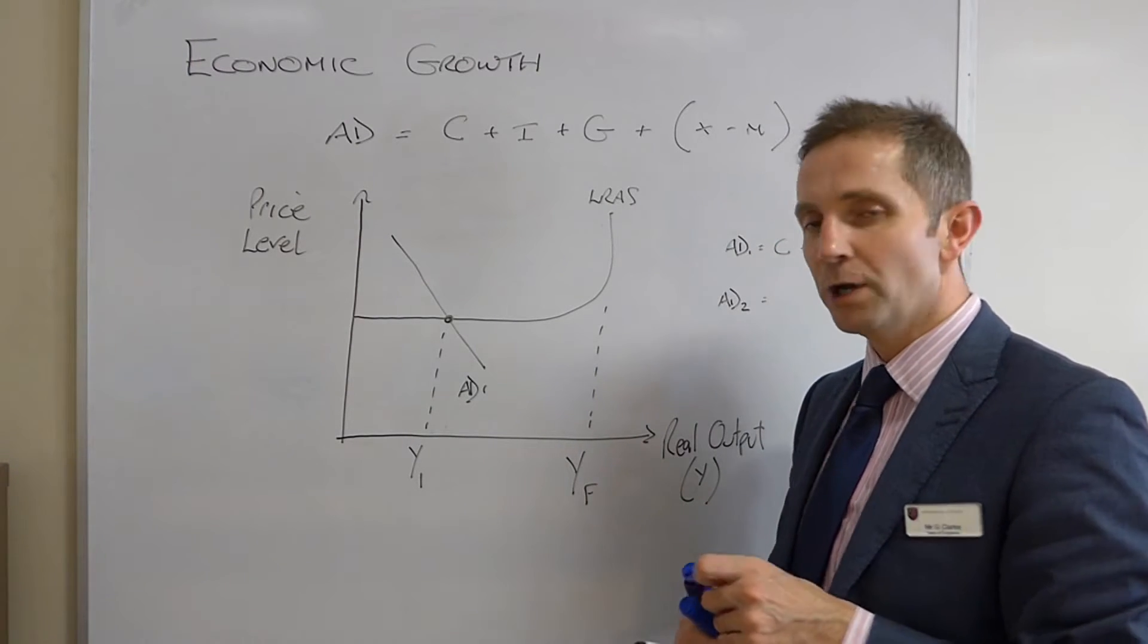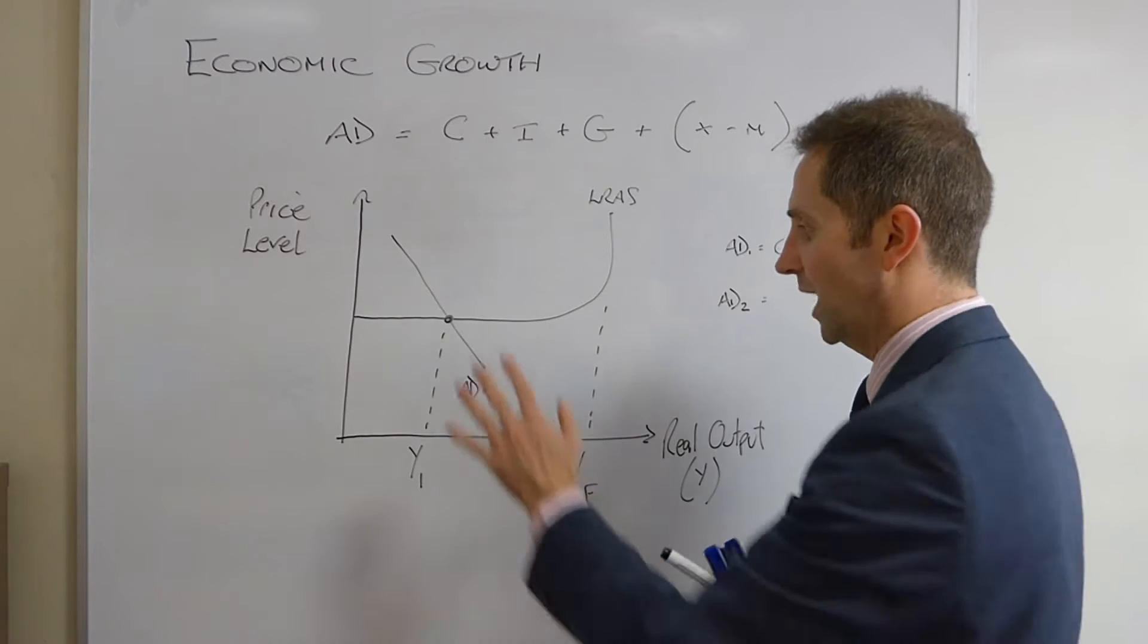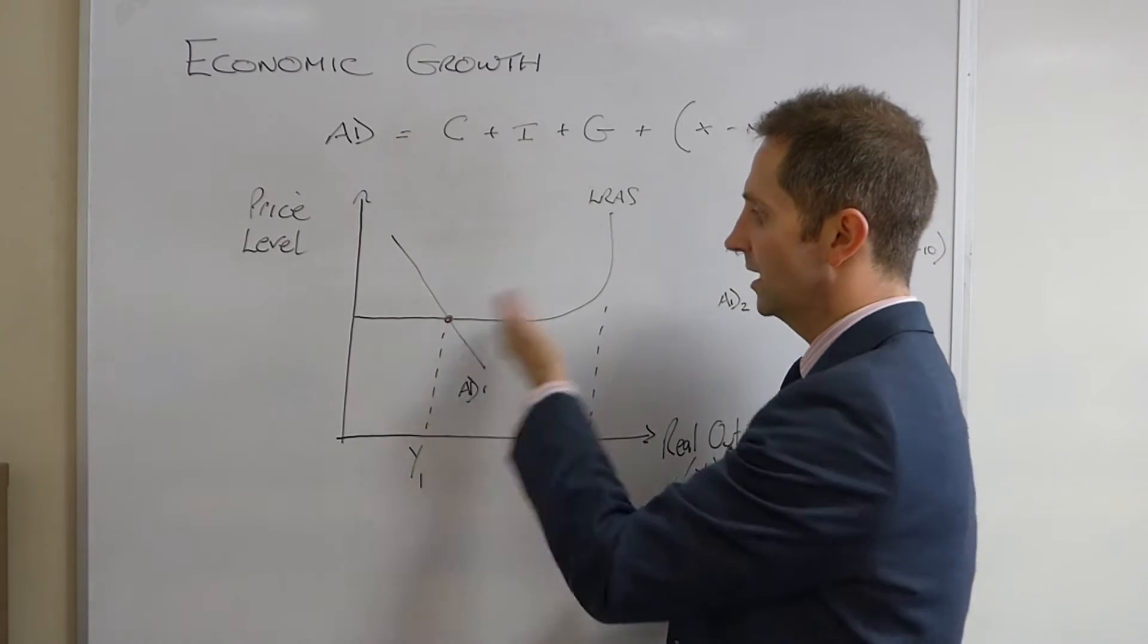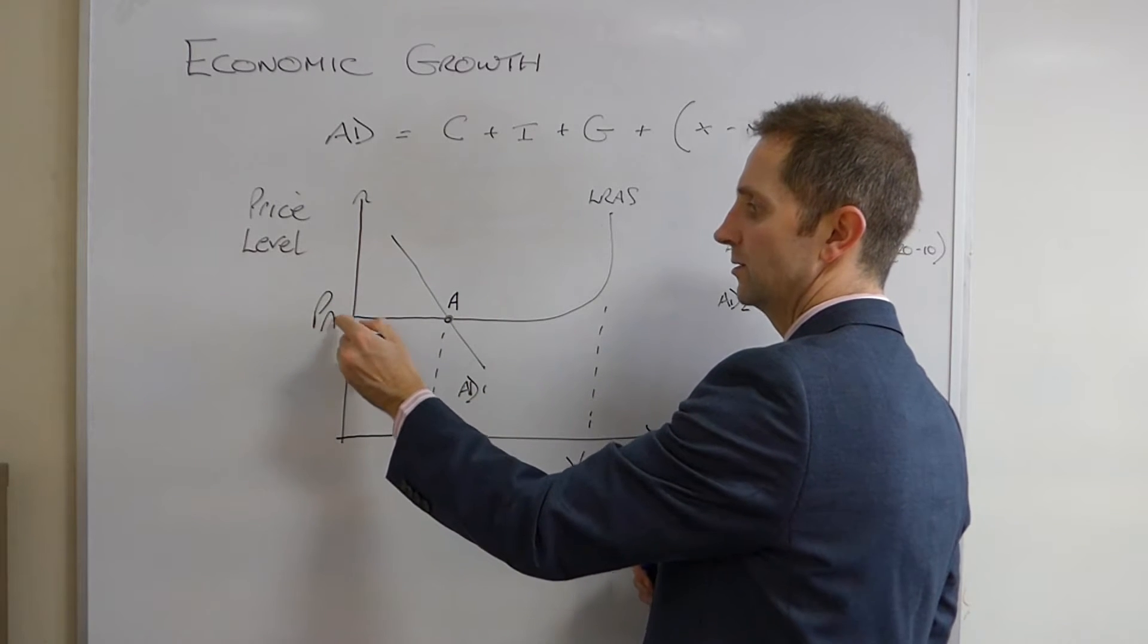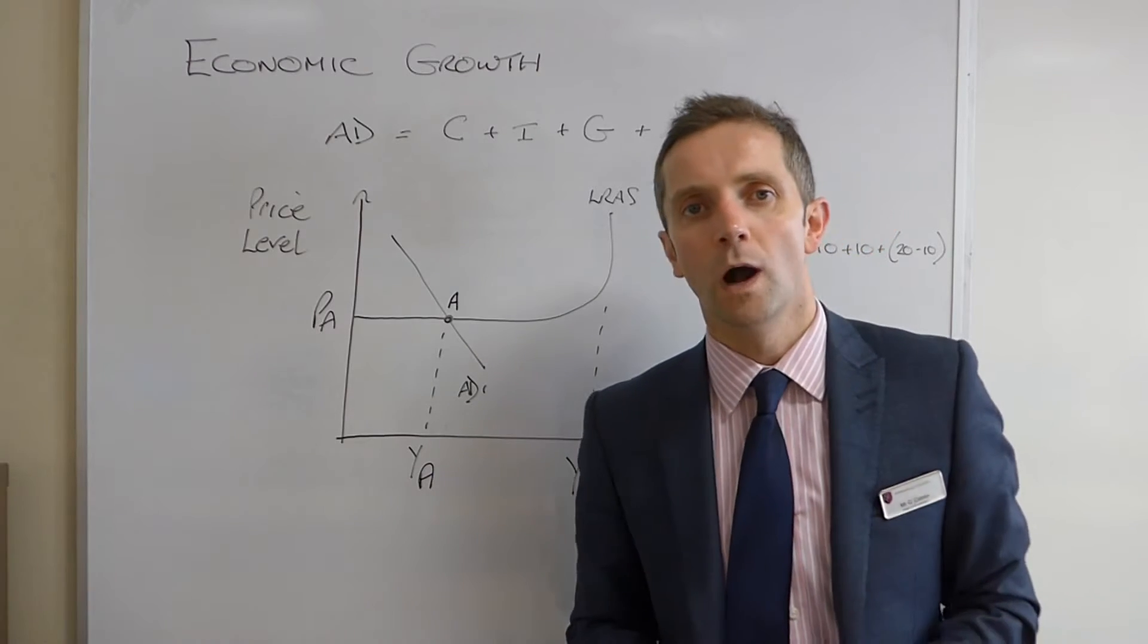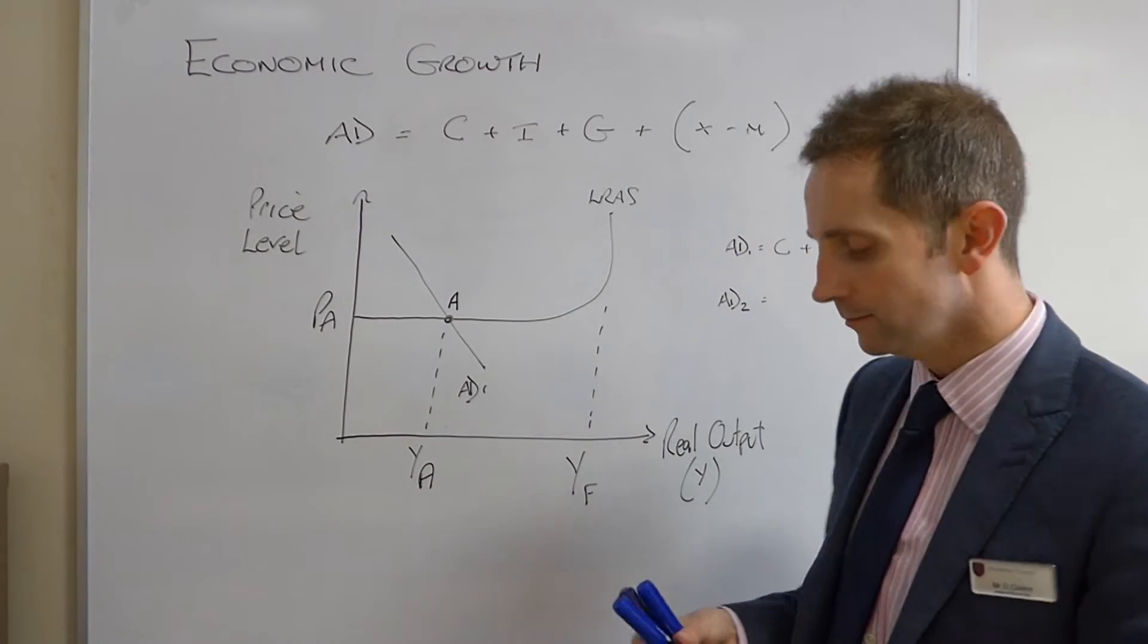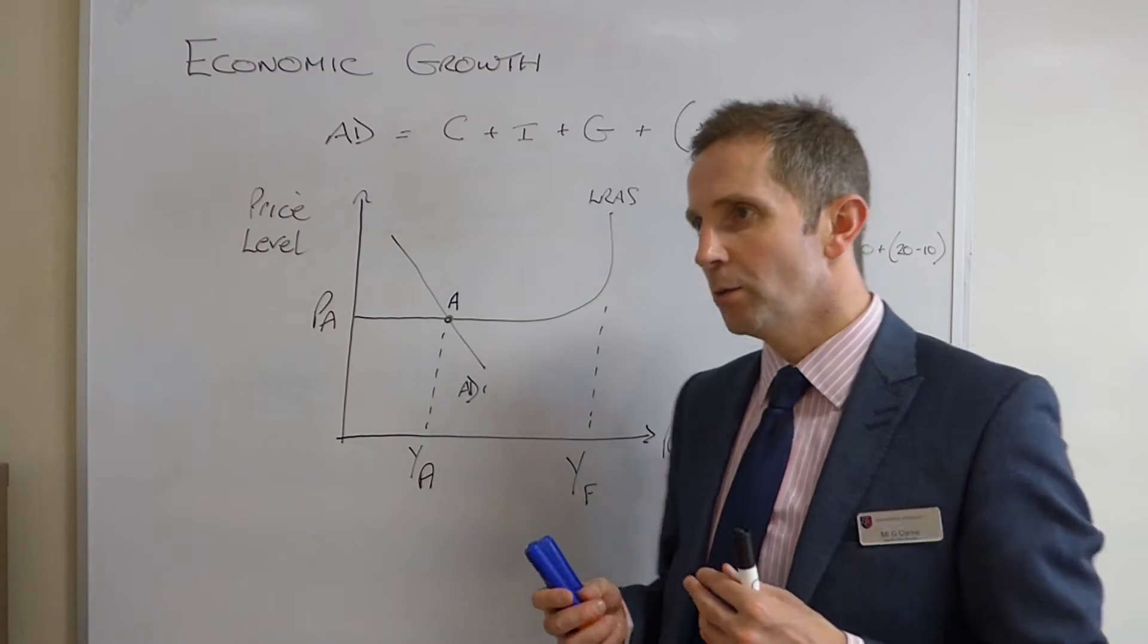Right, now you will know that equilibrium, the market clearing equilibrium, is the point at which AD, in this instance, equals AS, which in this case is at point A, and we will call this price PA and output of YA. Now, what would cause, ladies and gentlemen, economic growth?